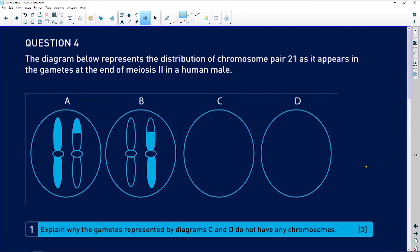Alright, let's look at our question. Question four, the diagram below represents the distribution of chromosome pair 21 as it appears in the gametes at the end of meiosis II in a human male.